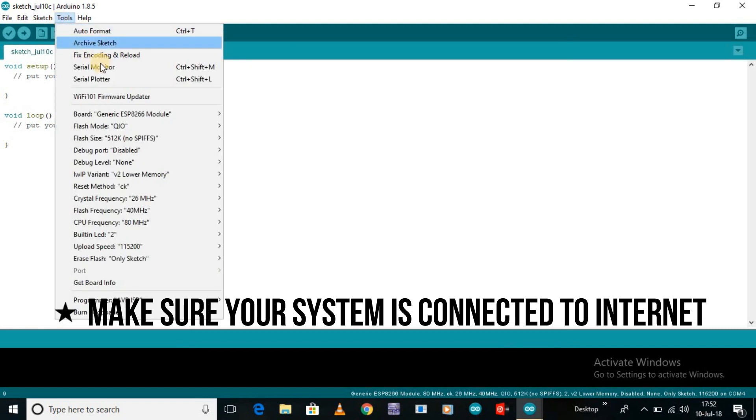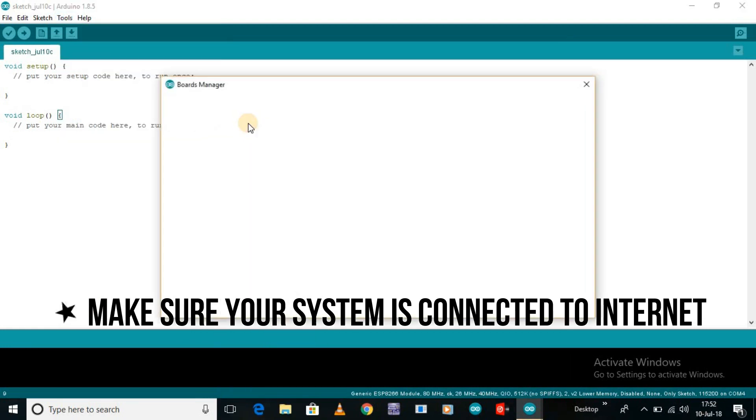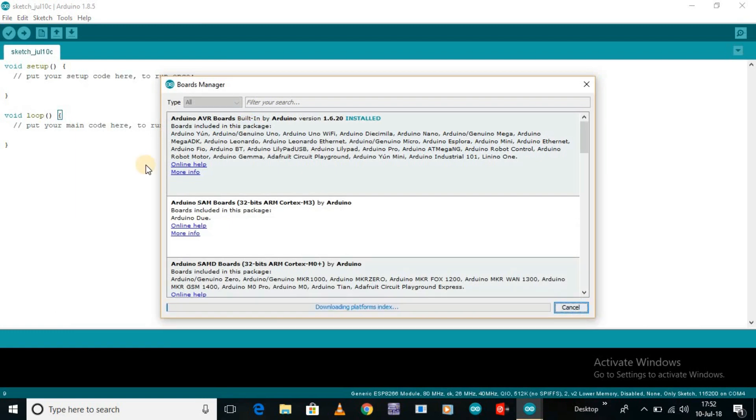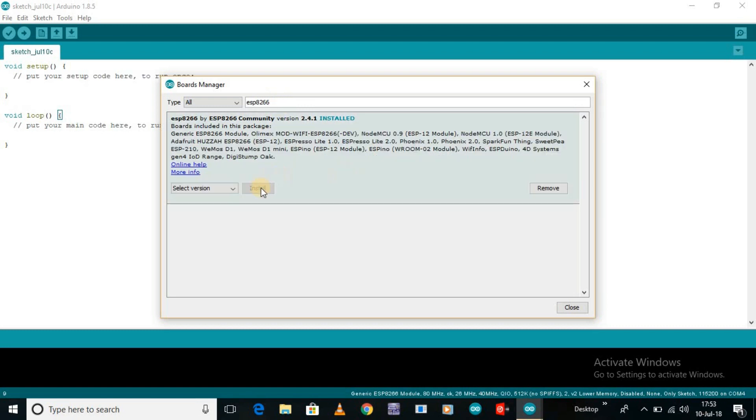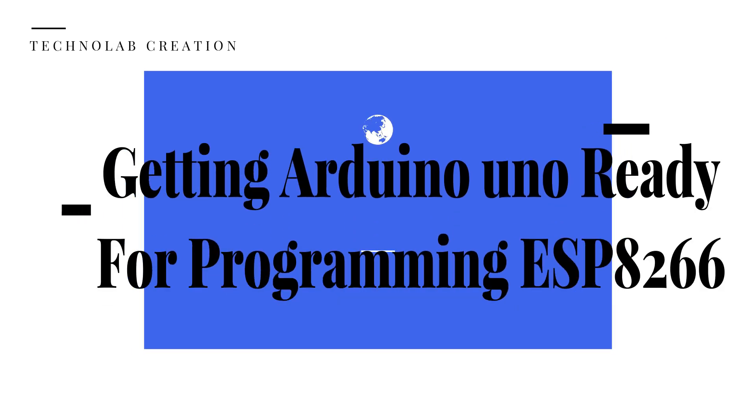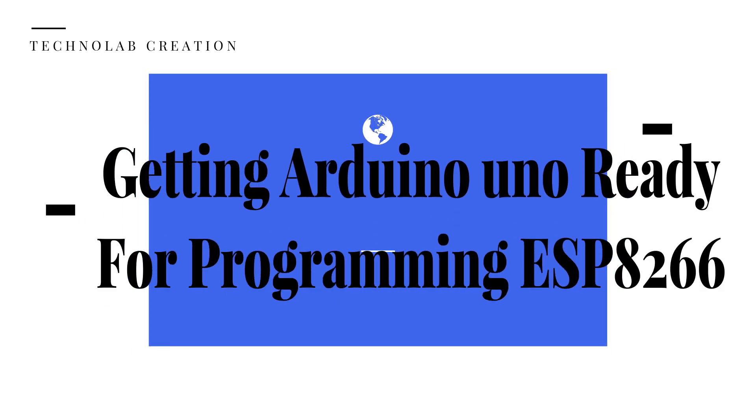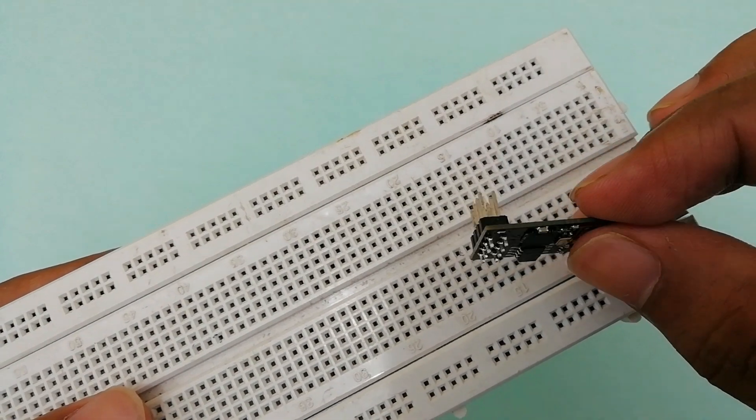Now go to Tools, Board, then Board Manager, and search for ESP8266 in the search field. Select the ESP8266 by ESP8266 community and then click on Install. I already installed it.